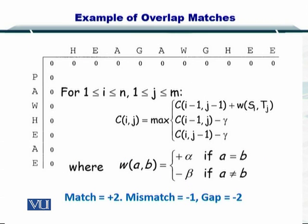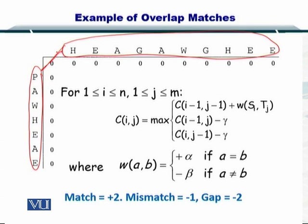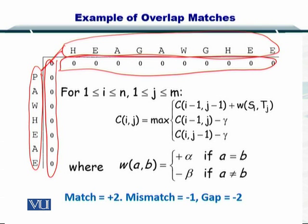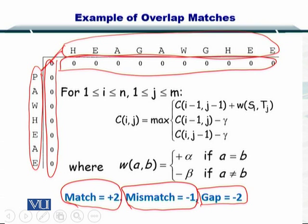Let's take a look at the Needleman-Wunsch once again. You put two sequences on the top and the left. You initialize the first column to zero and the first row to zero. Then you allocate scores for match, mismatch, and gap penalty.